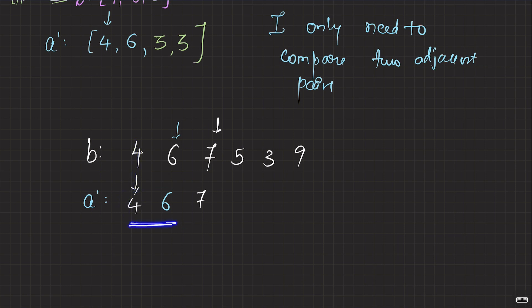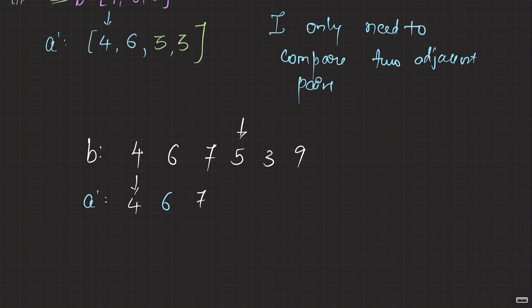4 is copied as it is. 6 is greater than or equal to 4 — just put as it is. 7 is greater than or equal to 6 — put as it is. You can get [4, 6, 7] from this part. Now let's move to the next pair. Is 5 greater than or equal to 7? No, 5 is not greater than or equal to 7.